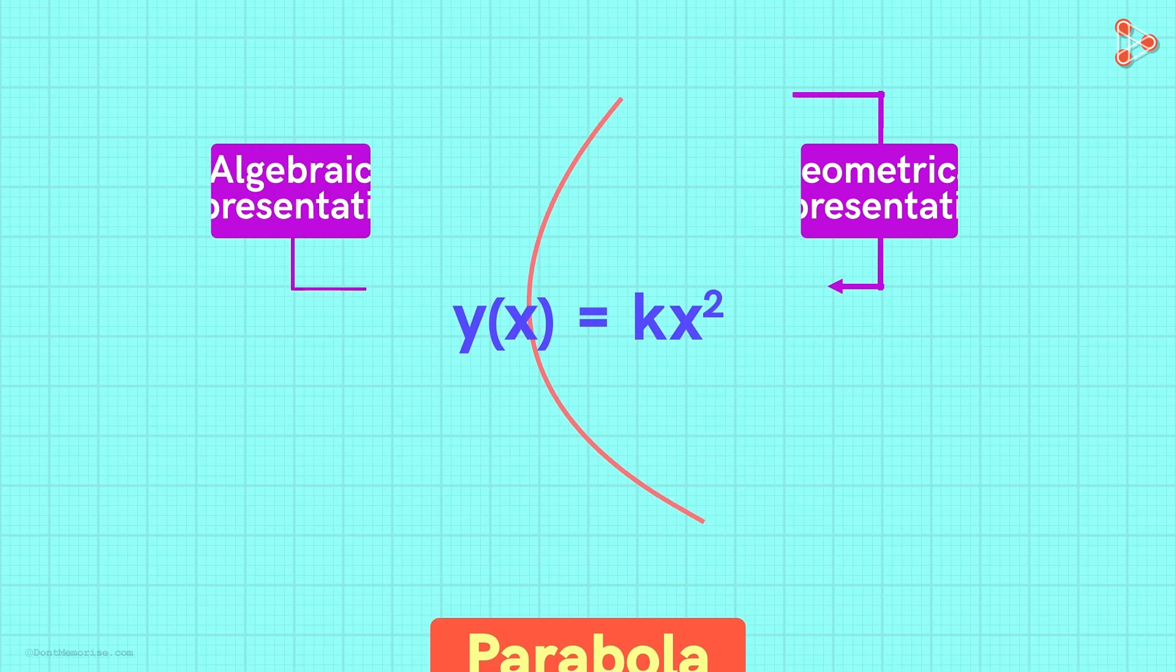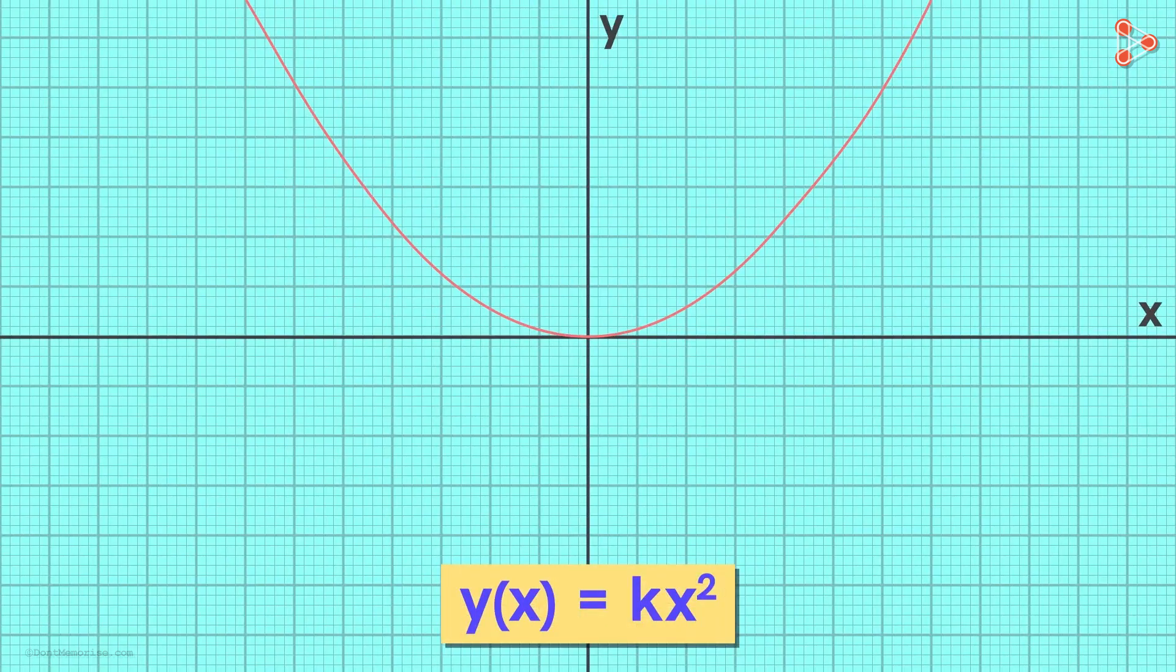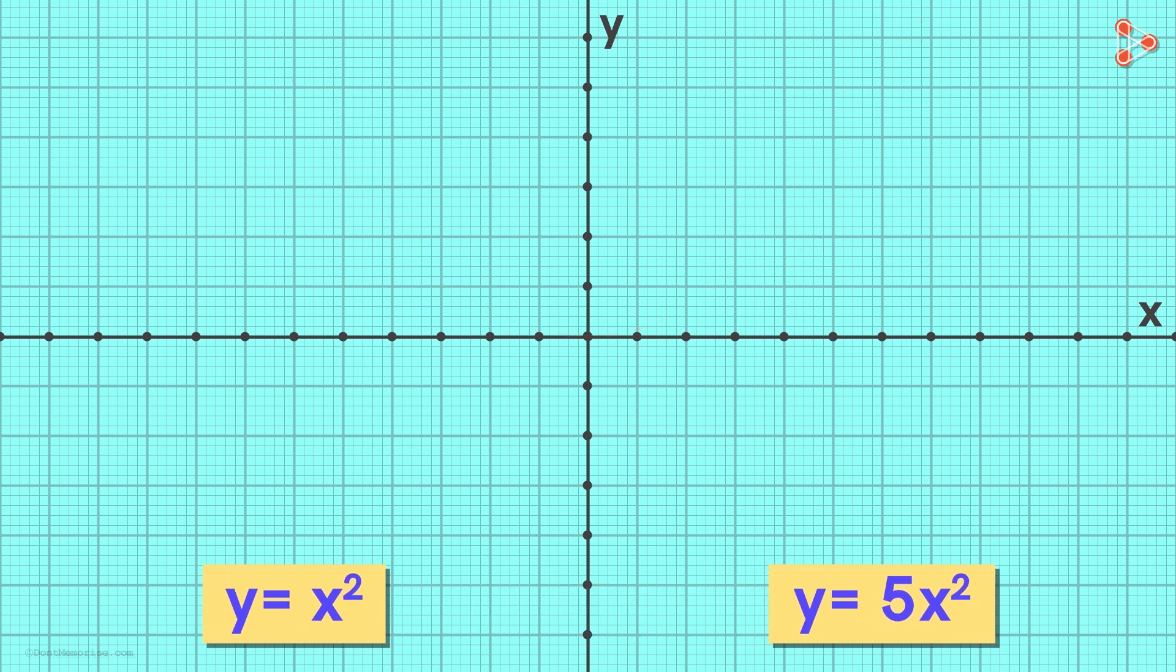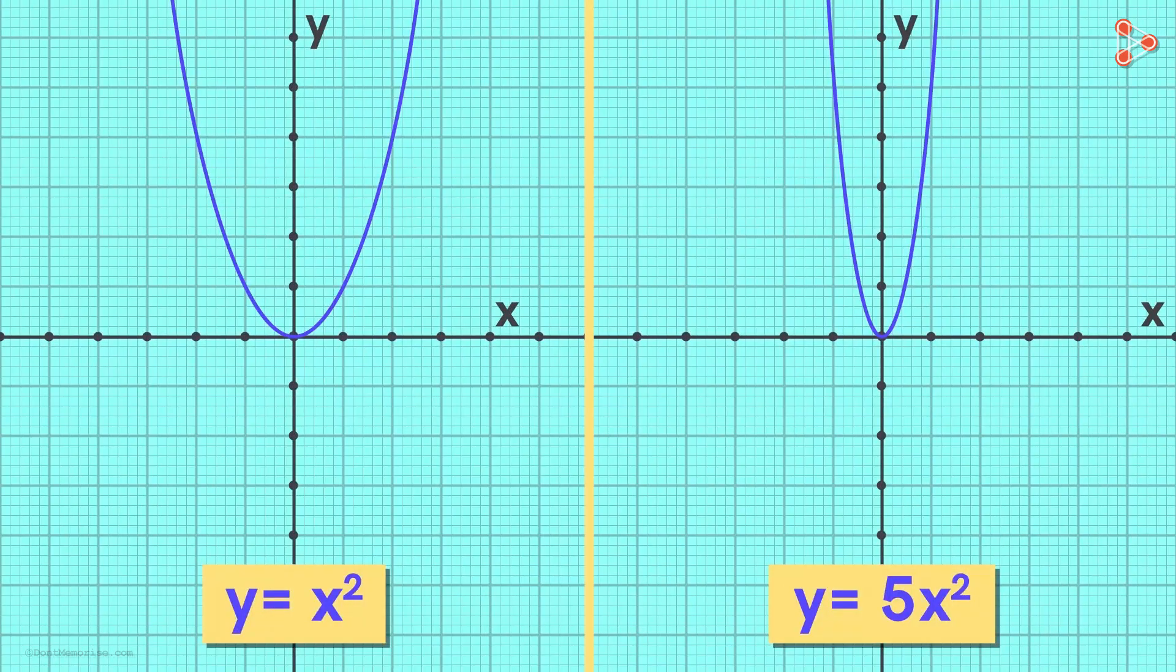Now let's say we draw X and Y axis like this. The values of independent variable X are represented by the points on the X axis. And the values of the dependent variable Y are represented by the points on the Y axis. Here, the X and the Y coordinates of the points on this curve are related based on this relation. If we take different values of the constant K here, we will get different functions. And for each function, we can draw a curve corresponding to it.